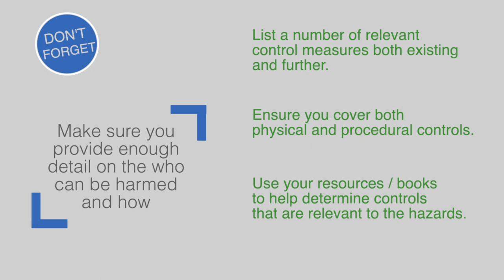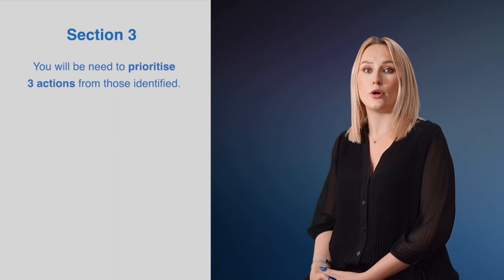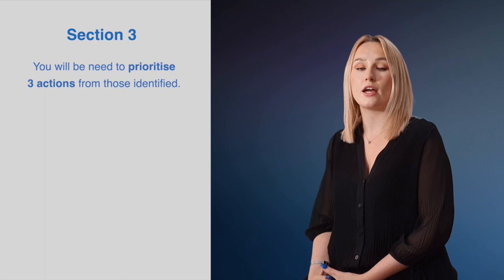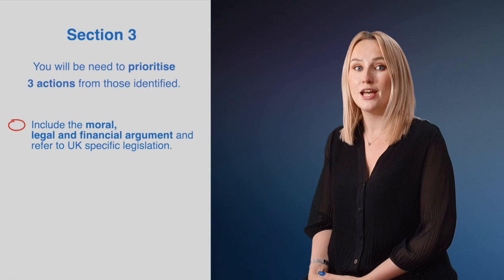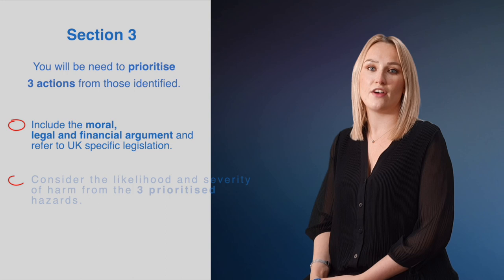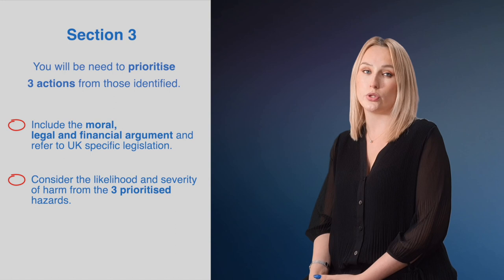As part of Section 3 of the assessment, you will need to prioritise three actions from those identified. These actions should be those with the highest priority, and you must justify as part of your assessment why you think they are the most urgent. You must include the moral, legal and financial argument, and refer to UK specific legislation as part of that. Consider the likelihood and severity of harm from the three prioritised hazards. Are they the hazards that present most harm to the organisation? And how effective will each action be in terms of controlling the risk — will it eliminate the hazard, reduce the hazard, will the risk be fully controlled?